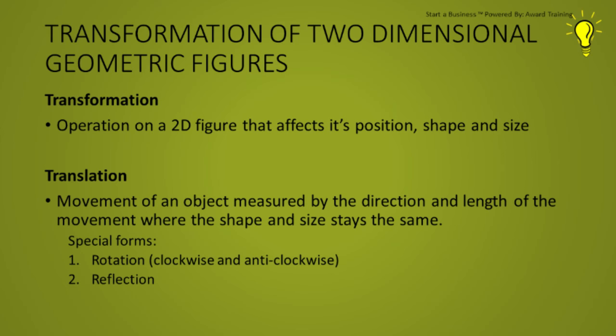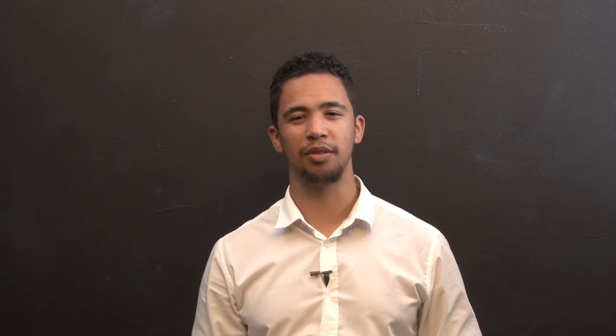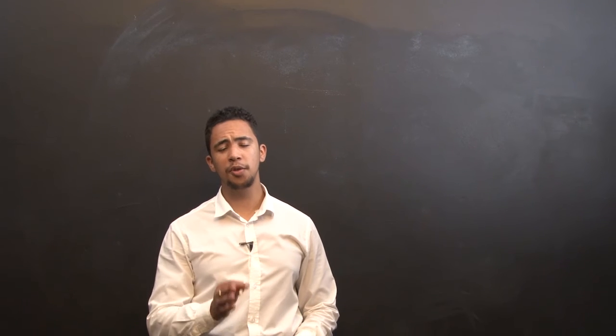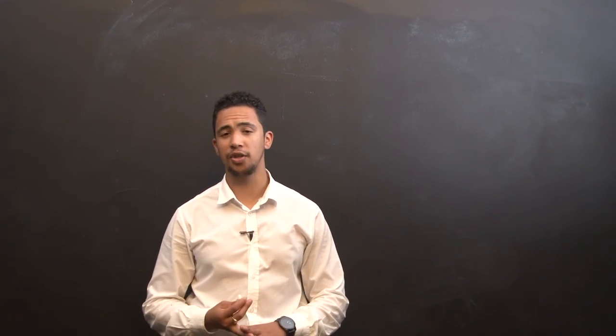Now let's take a look at a concept called transformation. The definition of transformation is the operation on a 2D figure that affects its position, shape, and size. And the other concept is called translation, which is the movement of an object measured by the direction and the length of the movement where the shape and size stays the same. Now there are two special forms of translation, rotation and reflection.